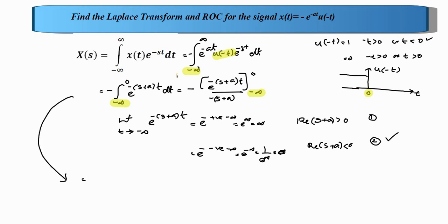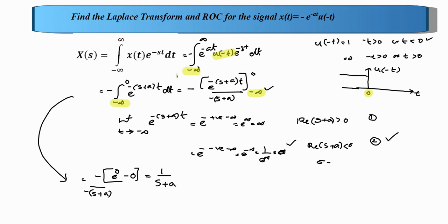Substituting: in the numerator there is already a minus, and the denominator is minus s plus a. At the limit t tending to 0, e raised to 0 equals 1; at the limit t tending to minus infinity, we write 0 (the converging case). After simplification, the answer is 1 by s plus a. The condition is the real part of s plus a less than 0, i.e., sigma plus a less than 0, or sigma less than minus a. This is the ROC.